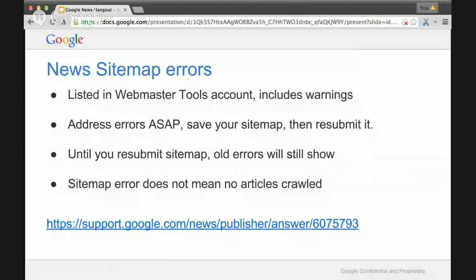When you submit your Google News sitemap to your Webmaster Tools account, you can see whether the sitemap has errors and warnings. Check up periodically — you'll get a notification in Webmaster Tools if there's an error. If you see this, address the error ASAP. You should save your sitemap and resubmit it, because if you don't resubmit, these errors will persist for a long time.